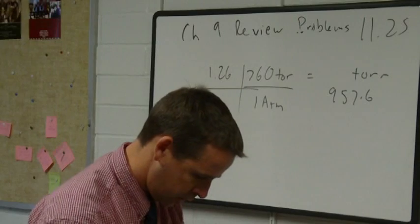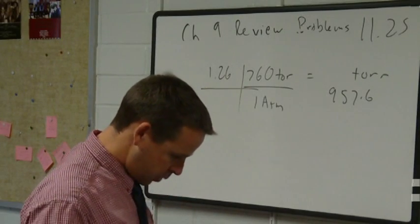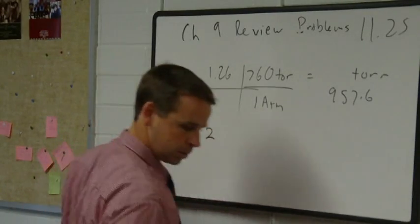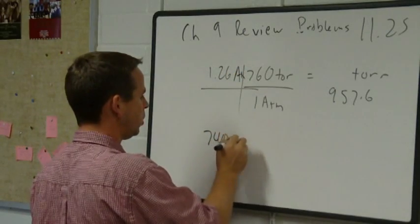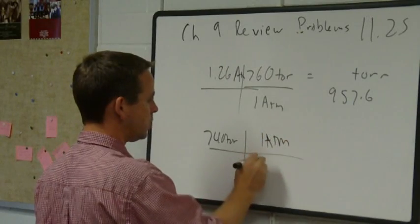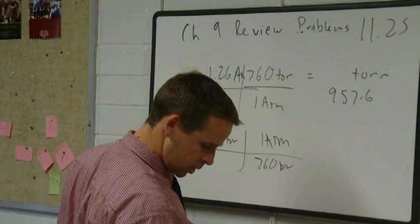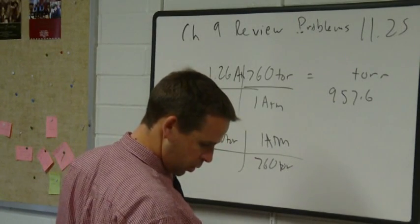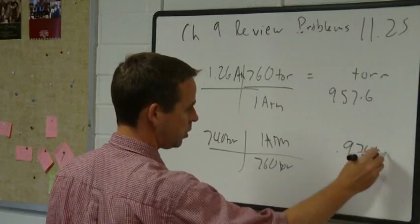Double check problem 1125. Part b: 740 torr to atmospheres. So 740 torr times 1 atmosphere per 760 torr gives 740 divided by 760, which is 0.97 atmospheres.